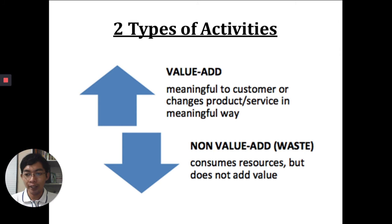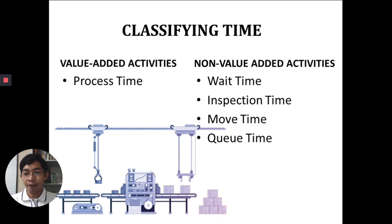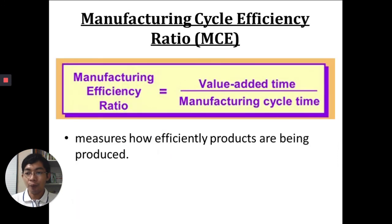In relation to the five types of time, we will discuss two types of activities: value-adding time and non-value-adding time. Value-adding time is meaningful to the customer or changes the product or service in a meaningful way — it adds importance or worth to the product. Non-value-added time, or waste, consumes resources but does not add value. Under value-added activities you only have process time; the rest — wait time, inspection time, move time, and queue time — are non-value-added activities.